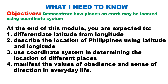Objectives: Demonstrate how places on Earth may be located using a coordinate system. At the end of this module, you are expected to: 1. Differentiate latitude from longitude. 2. Describe the location of the Philippines using latitude and longitude. 3. Use the coordinate system in determining the location of different places. And 4. Manifest the values of obedience and sense of direction in everyday life.